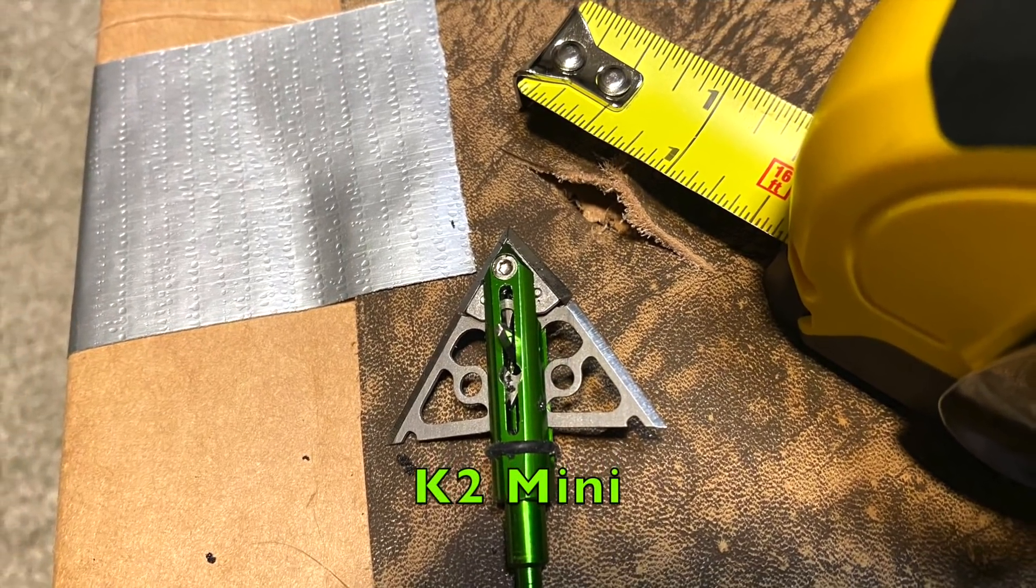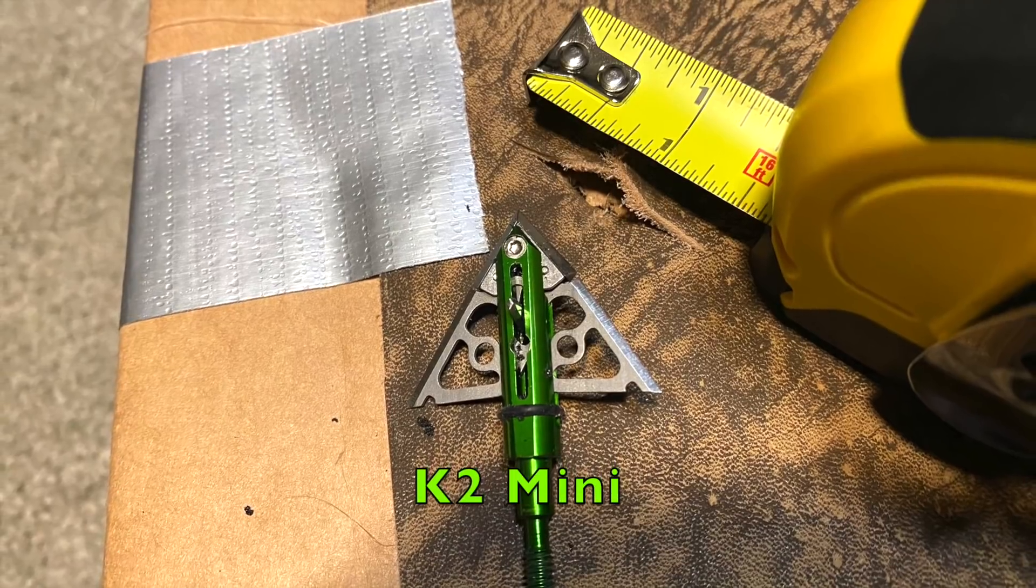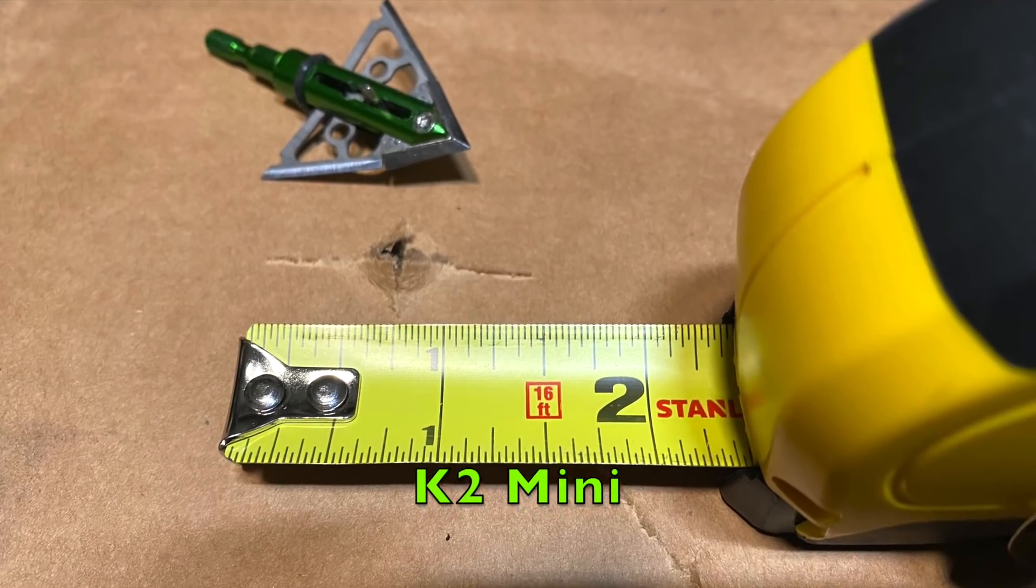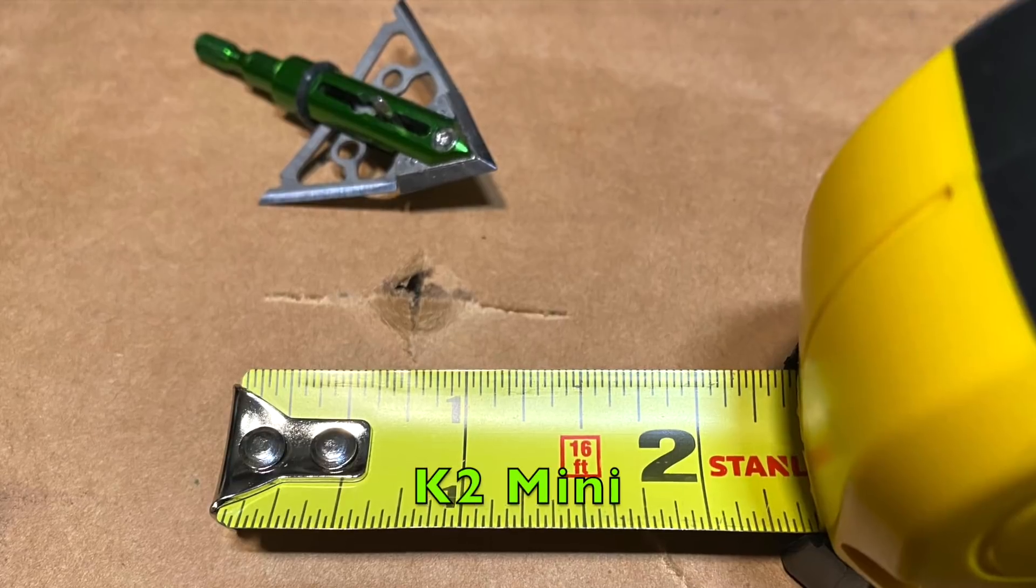The K2 Mini opened one and a half inches on the initial impact and then on the back of the box it stayed right at that one and a half inches.